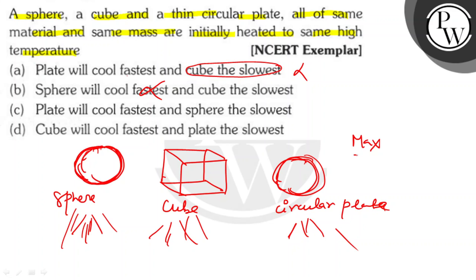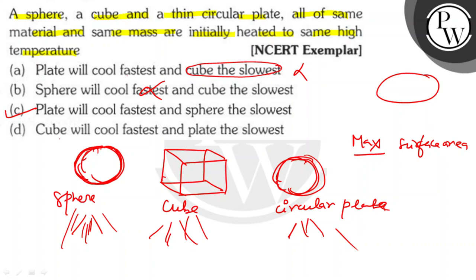The circular plate has maximum surface area, so it will cool the maximum — the fastest. Cube is the slowest. Option C: cube will cool slowest and plate is the fastest. Option C is correct. Best of luck.